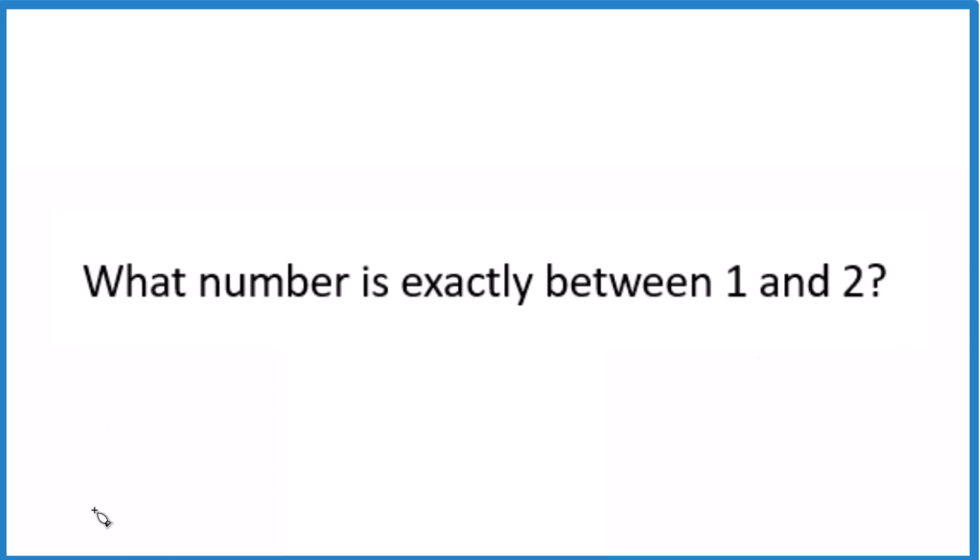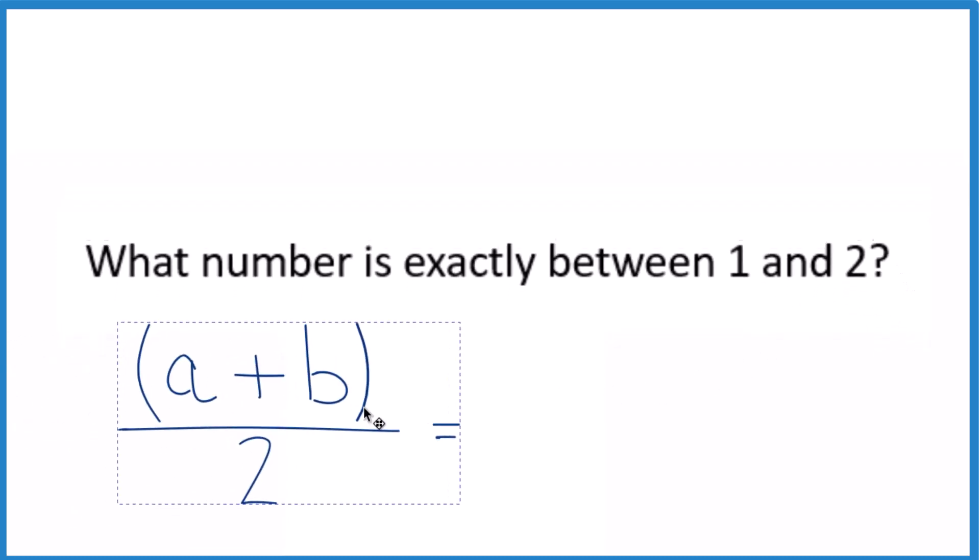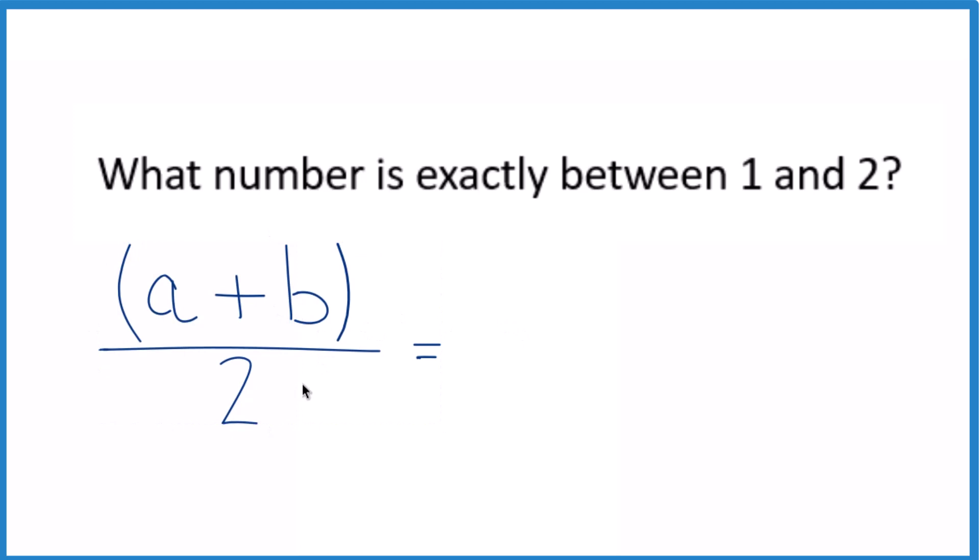The way I like to do it is I like to use this formula here. We have a plus b divided by 2. So we'll call this a and call this b. We add them together and divide by 2. So we're just taking the average of 1 and 2.